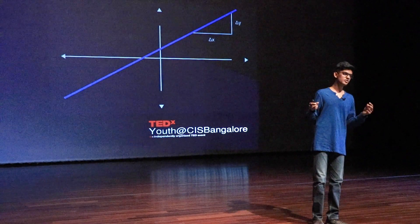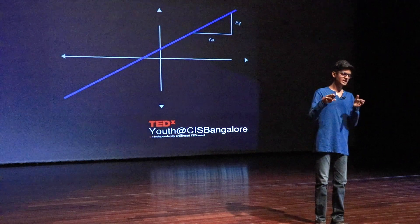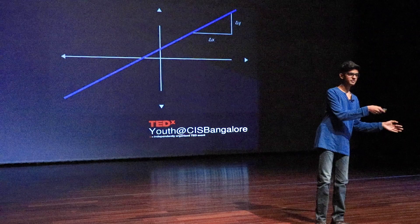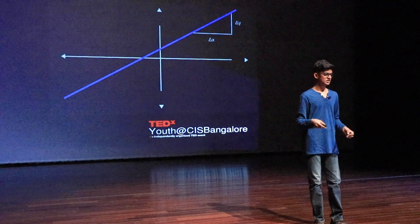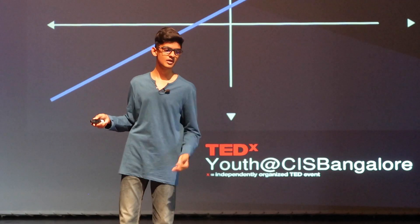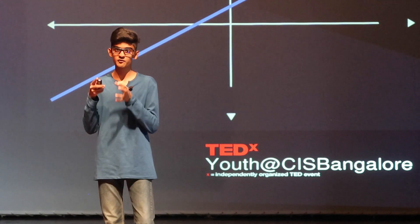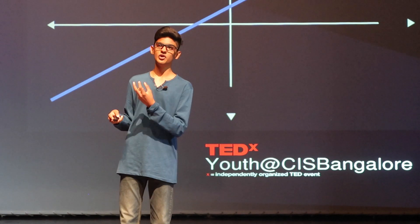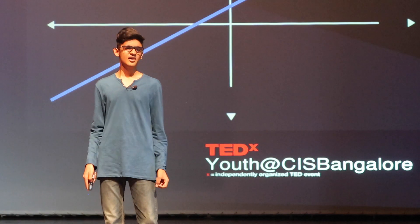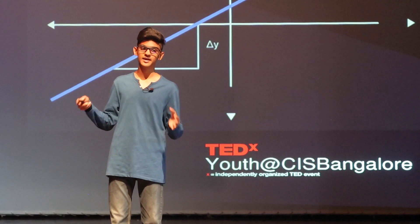I'd like to take you through a demonstration of the two basic fundamental concepts that calculus is built on: differentiation and integration. Starting with differentiation — over here I have a simple line, and to find the slope of the line it's a very simple and straightforward process. Take any two points, calculate the change in y, and divide it by the change in x. This value remains constant no matter which two points you take.